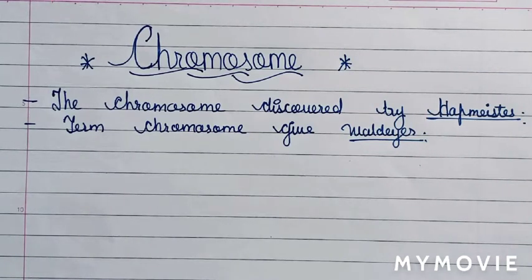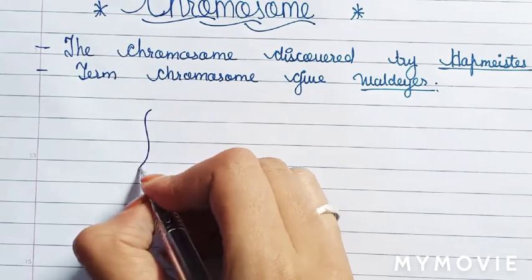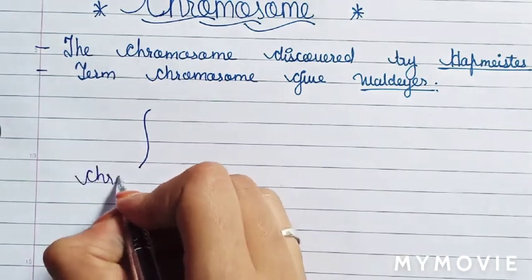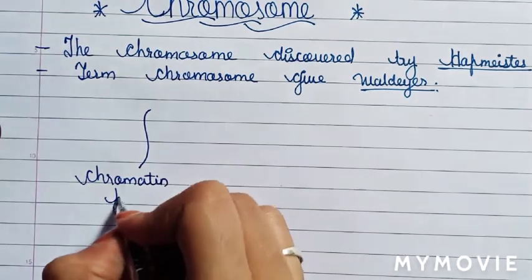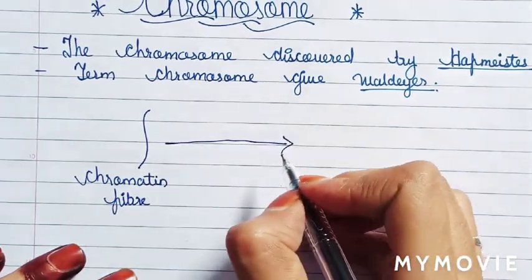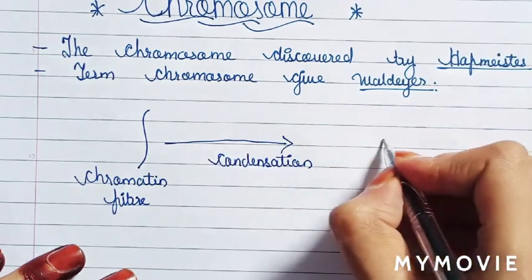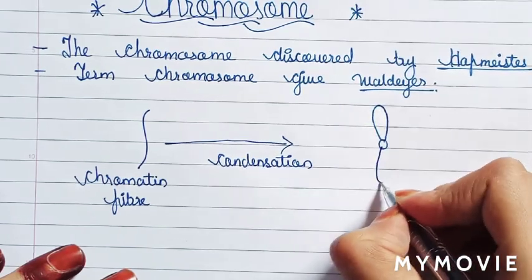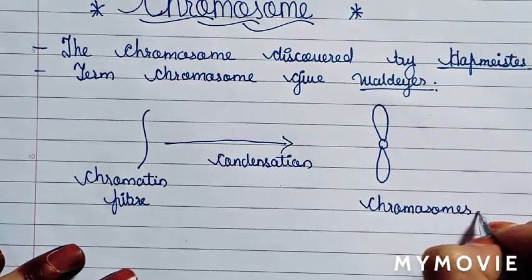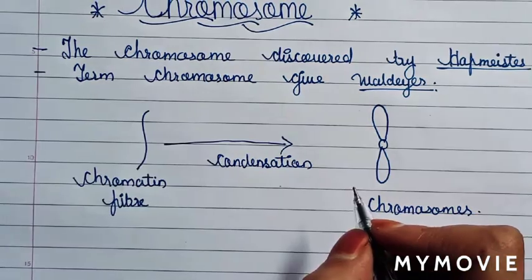Chromosomes are formed from the chromatin fibers. If we see the structure of chromatin fibers, it is a thread-like structure — we call it a chromatin fiber. When this chromatin fiber undergoes condensation, it forms a chromosome. So chromosomes are formed due to the condensation of chromatin fibers.